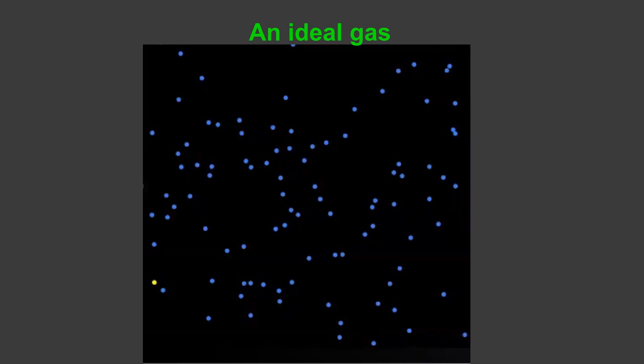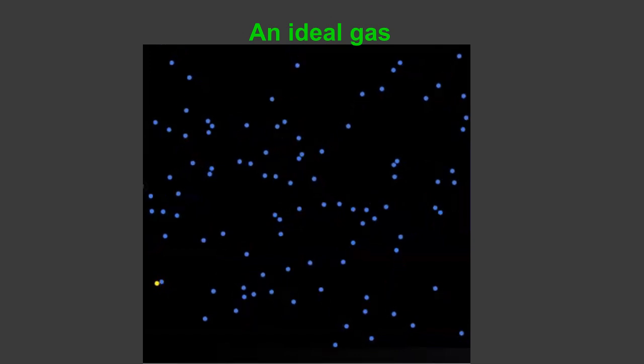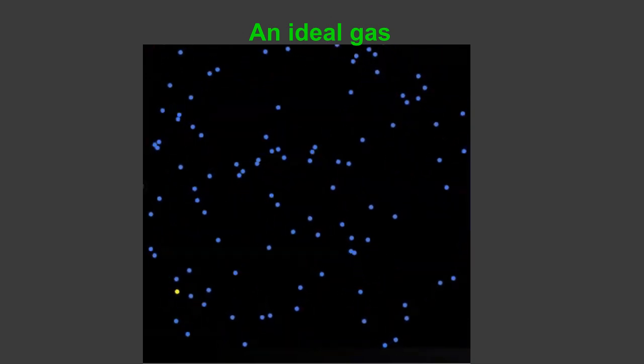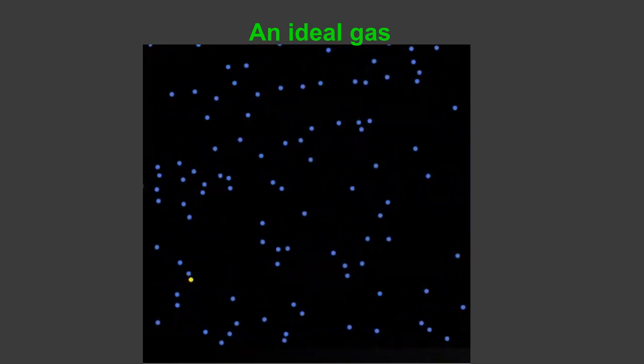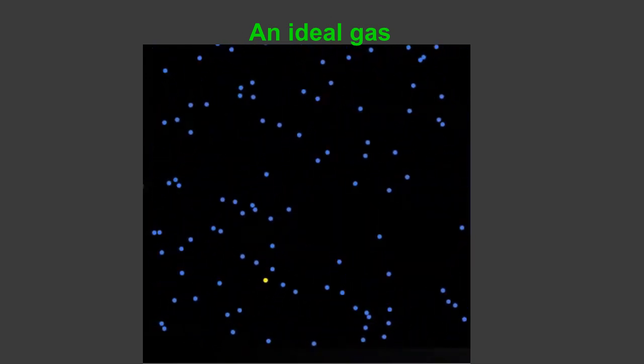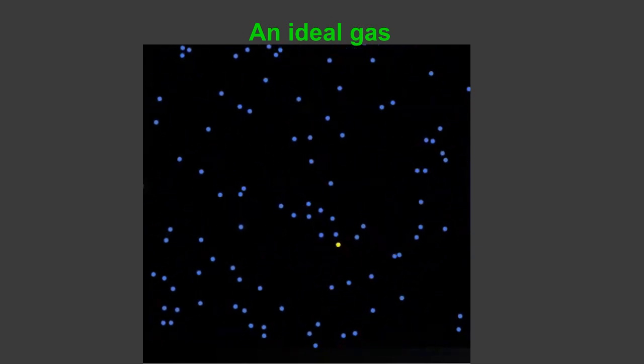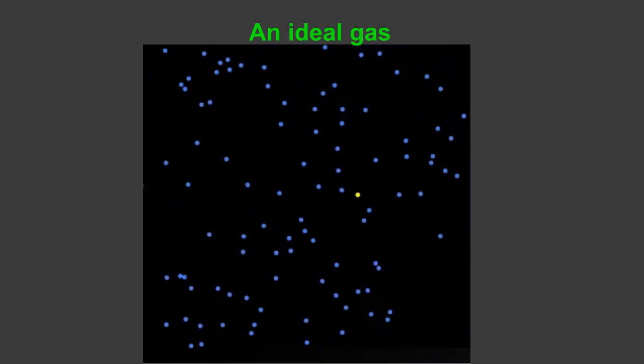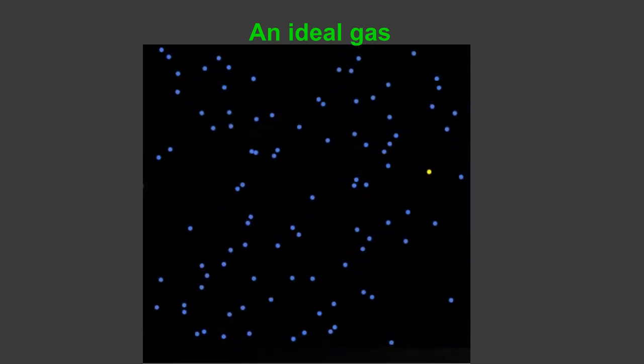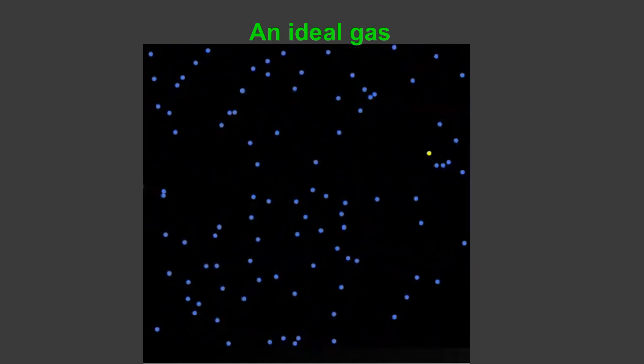Okay, so here we have sort of a picture of an ideal gas. It's a bunch of tiny little molecules moving around. One of them is a different color, so you can kind of see what it does. And they collide with the walls, and they collide with one another. But basically, there's a lot of random motion that happens.